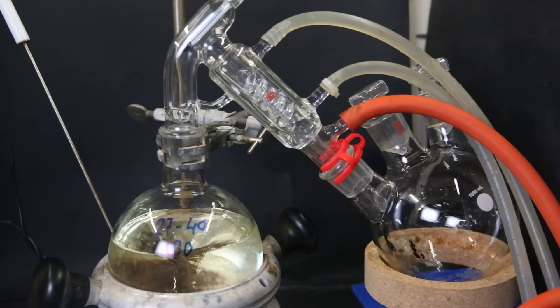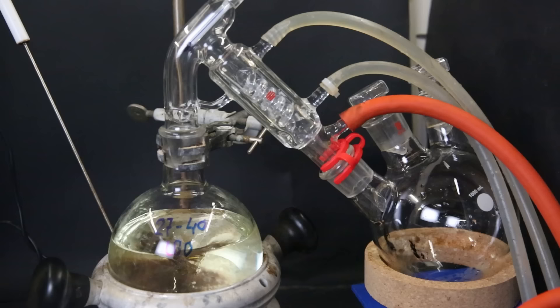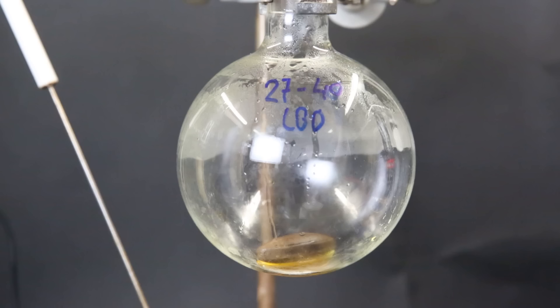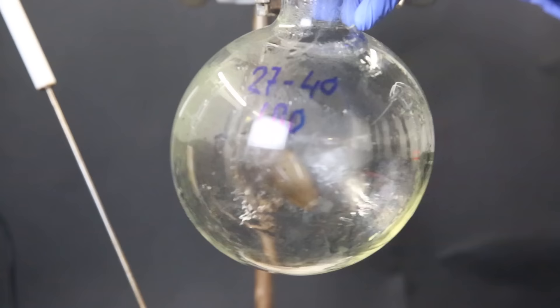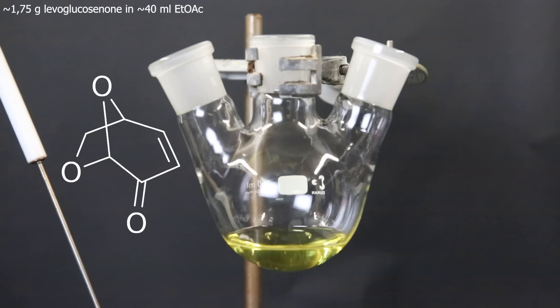Now I simply have to boil off all of the solvent, so I set it up for a short path vacuum distillation. When all of the solvent is gone, I am left with a bit of yellow liquid, which I transfer to a smaller flask with a pipette. I also washed the flask twice with some ethyl acetate, and the yield of levoglucosanone turned out to be 1.75 grams. Now that I have some levoglucosanone dissolved in ethyl acetate, I can move on to the next step and make the cyrene.